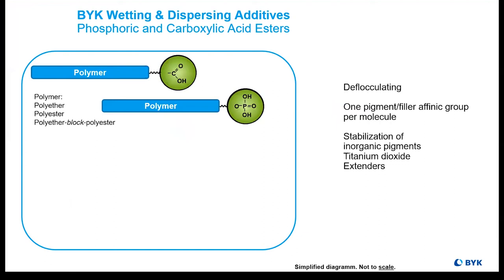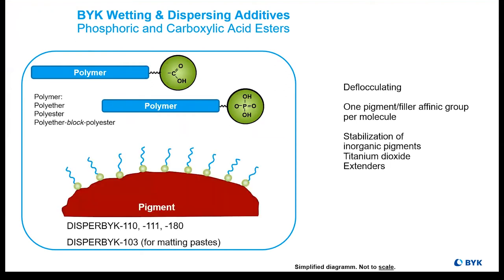Carboxylic acid esters are the most common acid ester produced worldwide since they occur naturally. Phosphoric acid esters are usually derivatives of urea urethanes and are also great as wetting and dispersing agents. These are very simple structures intended to work extremely well with stabilizing inorganic pigments, extenders, and titanium dioxide. Phosphoric acid esters aren't the most exciting of the additive group, but they do get the job done.